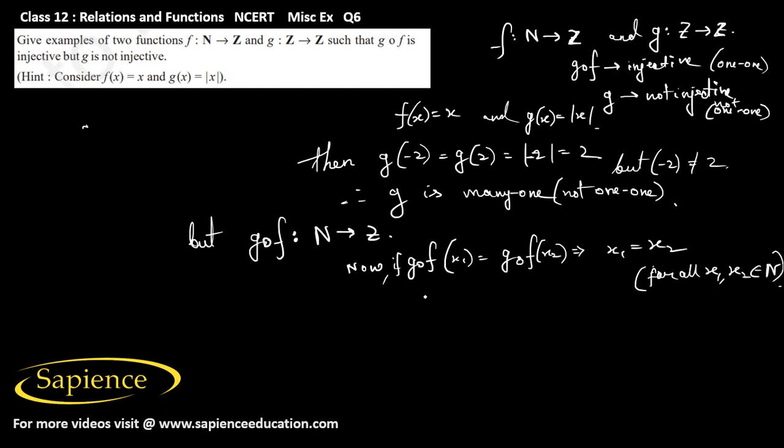Therefore, g of f is one-to-one, means it is injective, but g is not injective. Hence, this example can be given of the function f and the function g such that g of f is injective and g is not injective. Hope you understood.